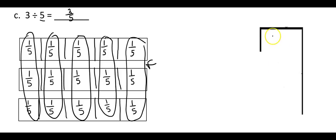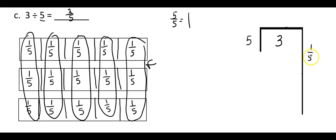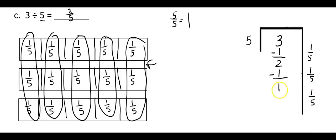Now let's show it on the forgiving method bracket with 3 divided by 5. I'll focus on the idea that 5 fifths equals 1 whole. Taking 5 times 1 fifth gives 5 fifths, which equals 1, so I subtract 1 and have a remainder of 2. I do the same thing again: 5 times 1 fifth equals 1, subtract, leaving 1. One more time: 5 times 1 fifth equals 1, subtract, and nothing is left over. Combining all three answers shows that 3 divided by 5 equals 3 fifths.